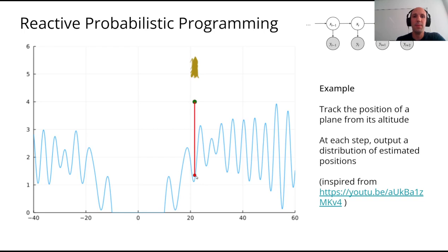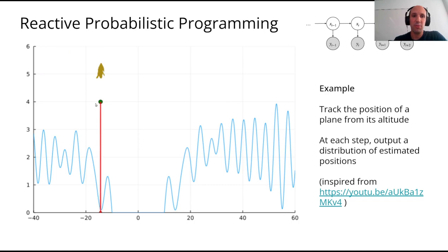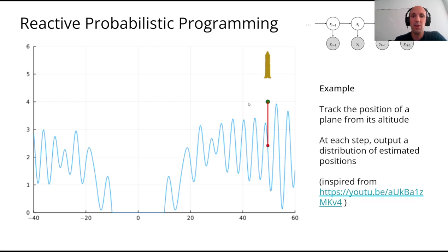Here is a more practical example of what we can do with reactive probabilistic programming. The green dot represents a plane crossing a fjord where you have some mountains on the left, a lake, and then some mountains on the right. The task is to track this plane given only information about its altitude, depicted by the red line.